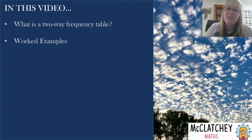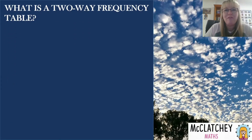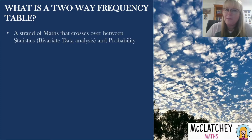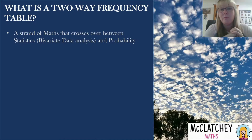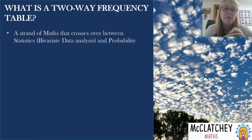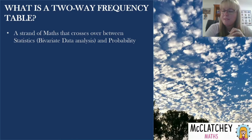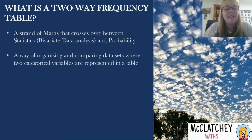We're going to cover what a two-way frequency table is and then do some worked examples. Two-way frequency tables are part of mathematics that crosses over between statistics and probability, because we're looking at two different data sets — that comes under bivariate data analysis. Although we don't do scatter plots, we represent the information in a table, not a graph. It could also fall under probability because you can use the information to determine the likelihood of a certain event occurring, and you would have seen two-way tables as part of probability all the way back to grade nine.